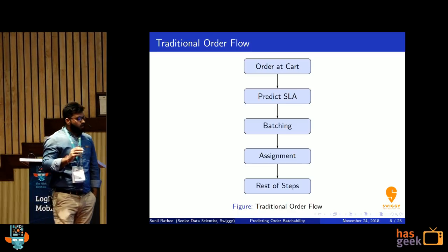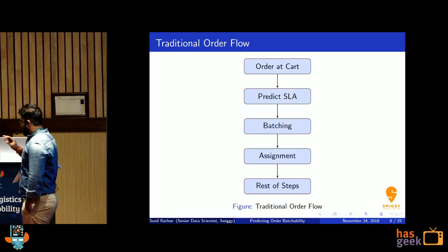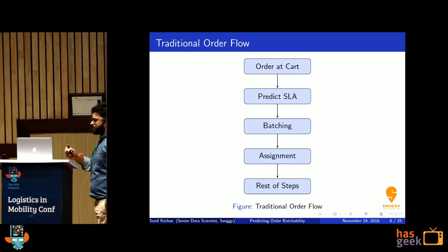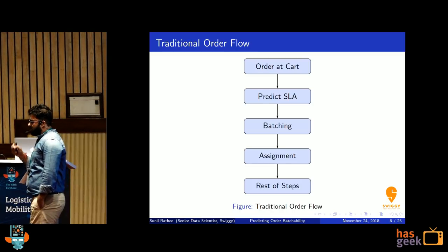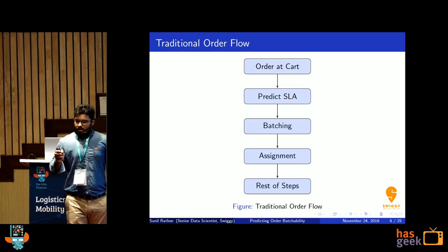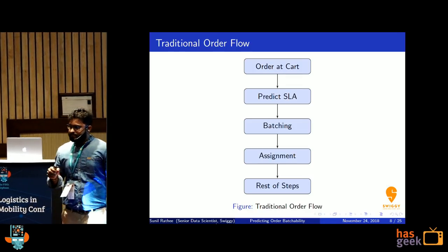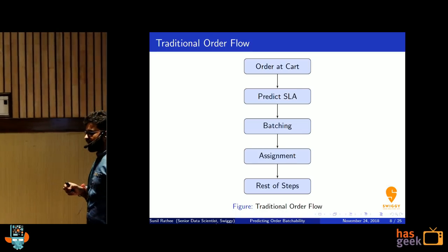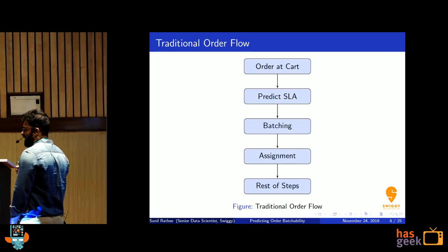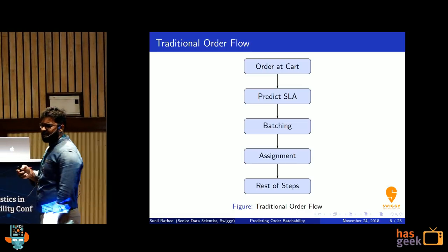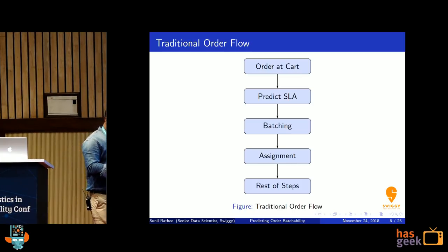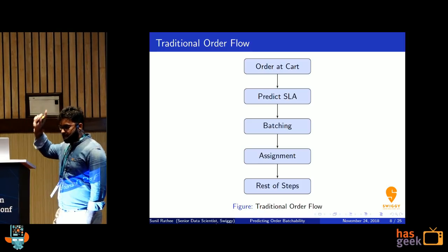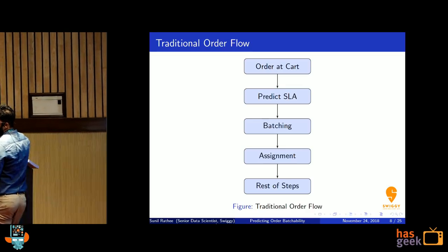Let's look at the traditional order flow. When you choose items and add them to the cart, we predict the SLA — the delivery time. If the customer is happy, he places the order. When the order comes into our environment, we check whether this order can be batched with some existing order or not. If it can, we assign the same delivery executive; otherwise we assign a new one. If you focus closely, this prediction of the SLA is before batching — that is the same story we discussed. At the time of prediction we don't know that this order is going to batch.